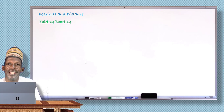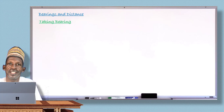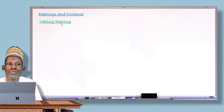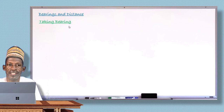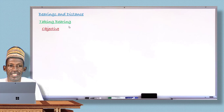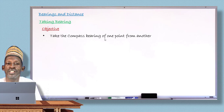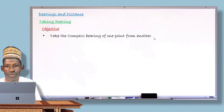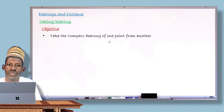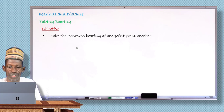Hello, my dear student. Welcome to another edition of your mathematics lesson. Today we are going to take the second lesson on this main topic. We are in the topic of distance and bearing, and what we are going to learn today is the second type of bearing — that is compressed bearing. After completing this lesson, the student will be able to find the compressed bearing of one point from another.